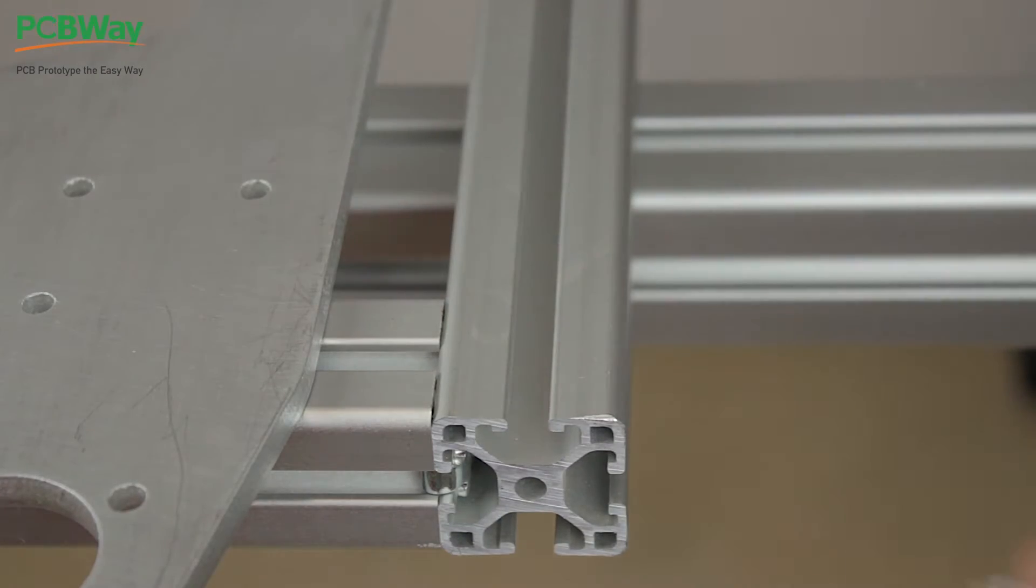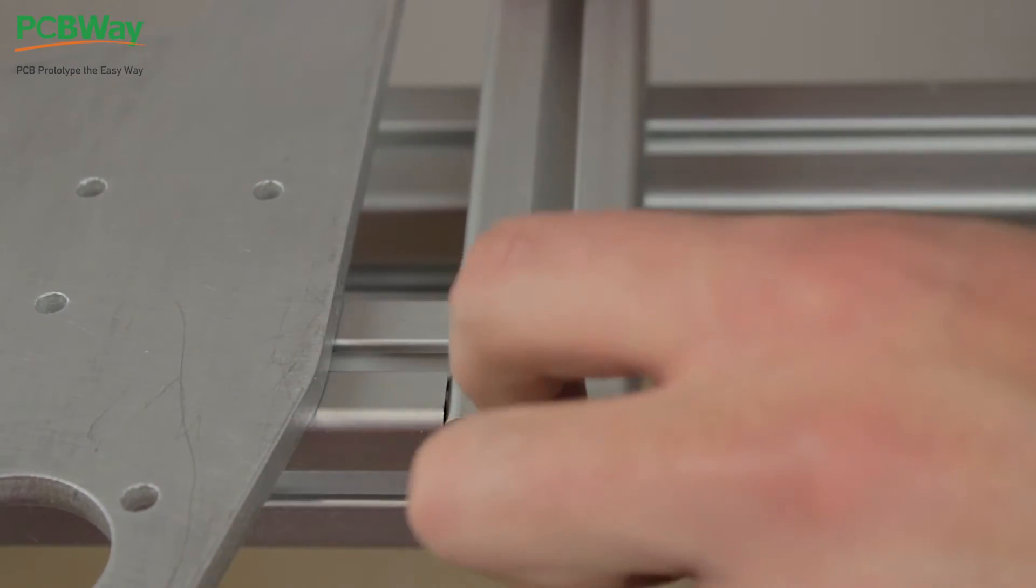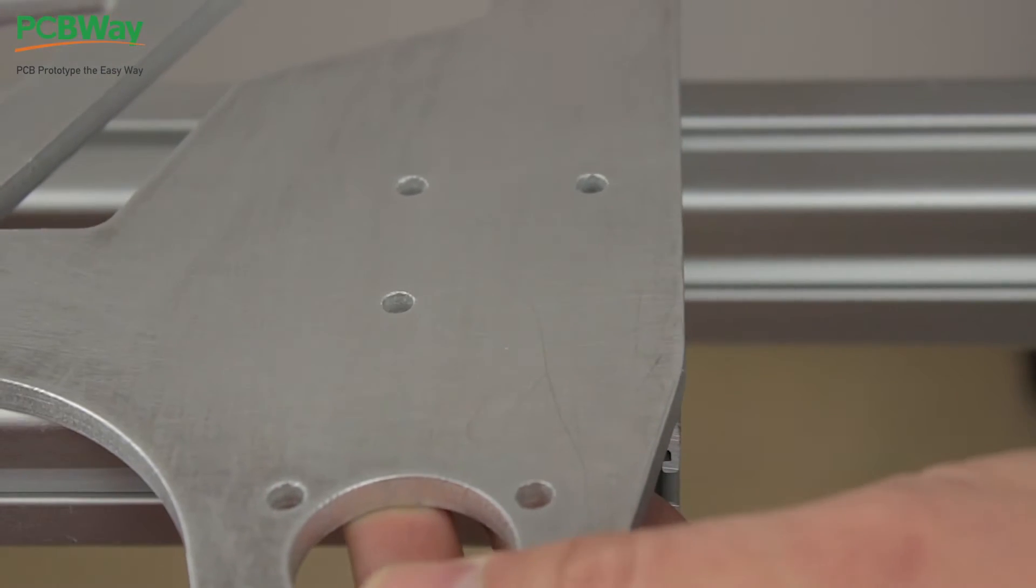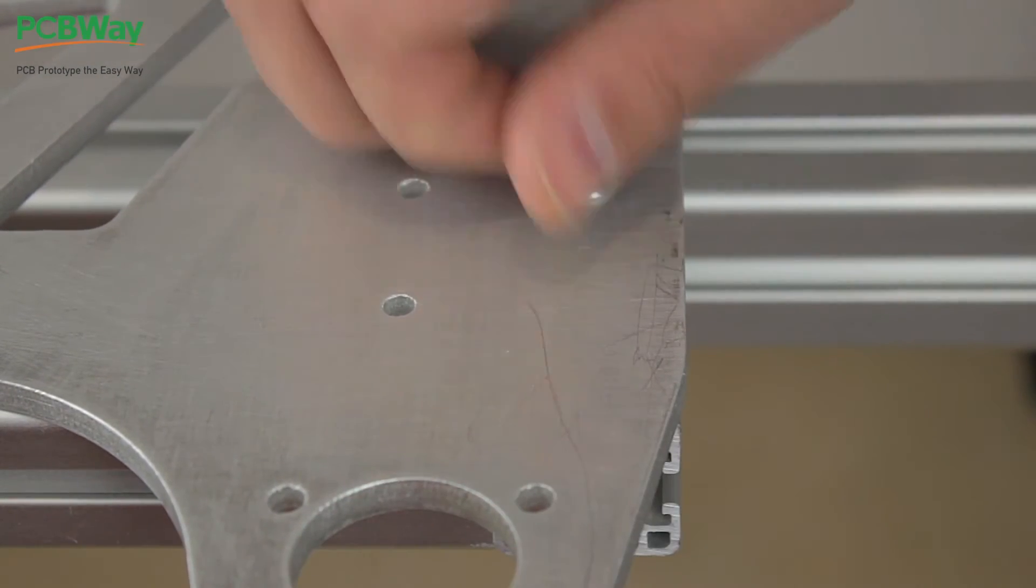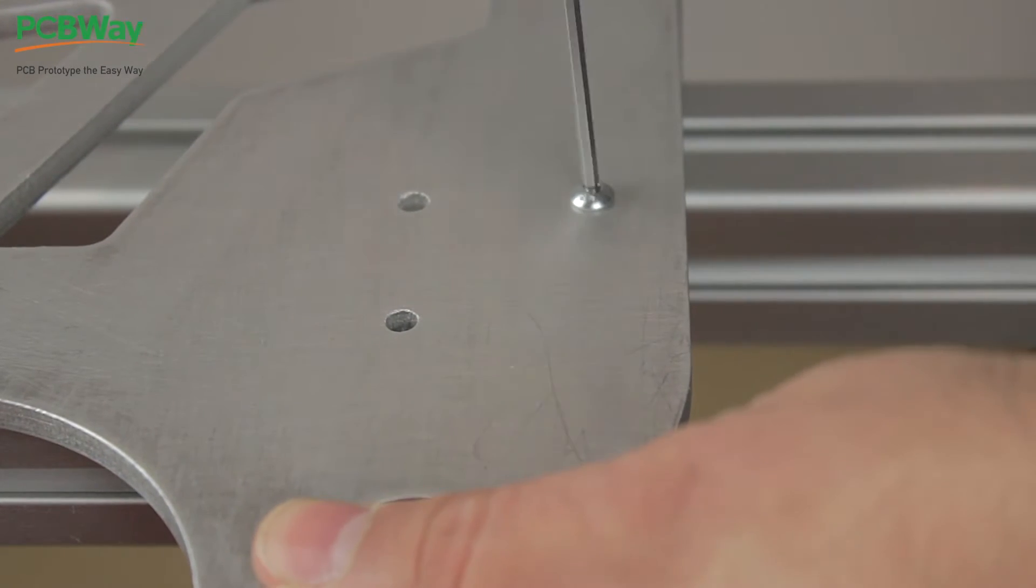Now back to the parts provided by PCBWay, they will be attached to the print bed frame using the same M4 bolts, but this time with smaller nuts that fit the profile. We'll simply slide the nut in place, align the holes, insert the bolt from top, tighten it and we'll be ready to go.